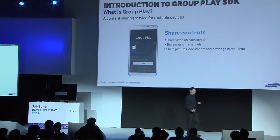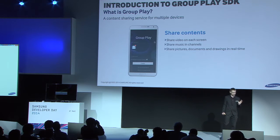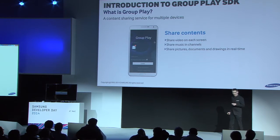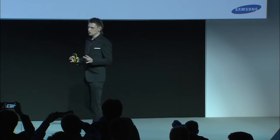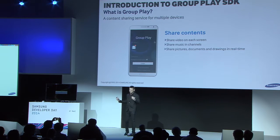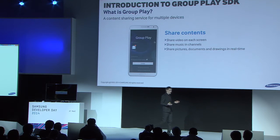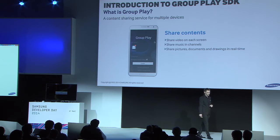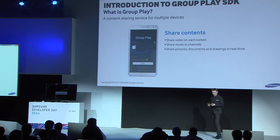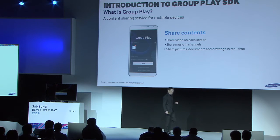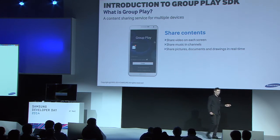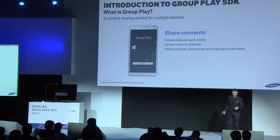The first thing you should know before starting to develop with our Group ASDK is that the Group ASDK service is not a single module. It consists of an application and an SDK that utilizes the features of the former one. The Group ASDK application is an advanced real-time sharing service that allows sharing of media content like videos, pictures, and documents — all in real-time.